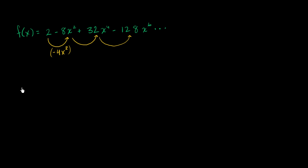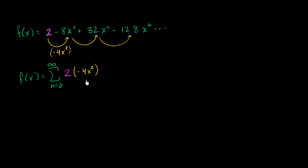Our first term is 2. So we can rewrite f(x) as being equal to the sum from n equals 0 to infinity of 2 times negative 4x squared to the nth power. This is a geometric series where our common ratio is negative 4x squared.